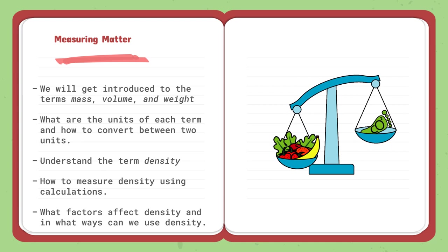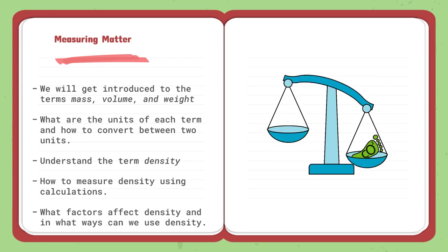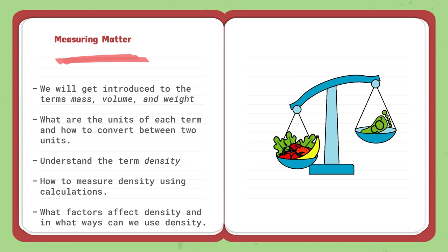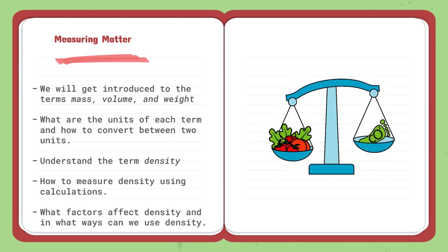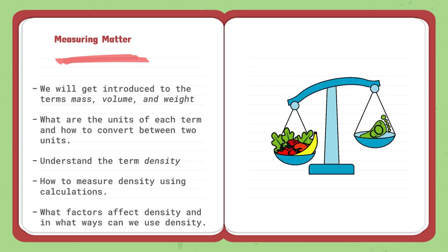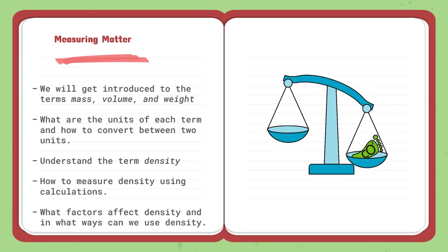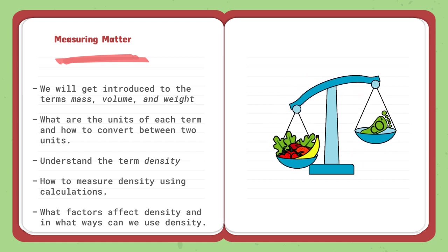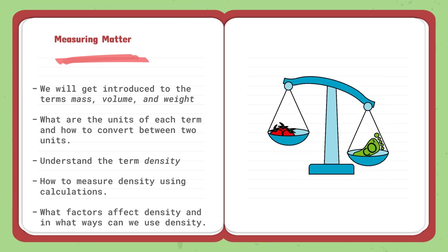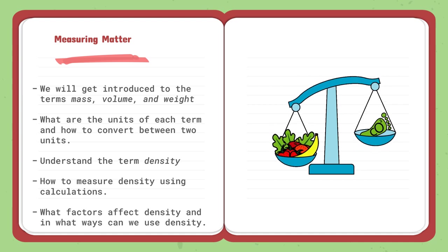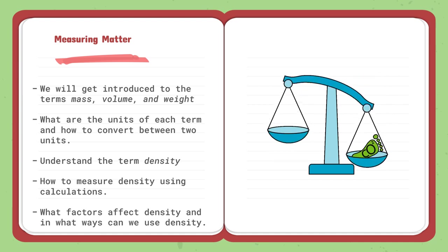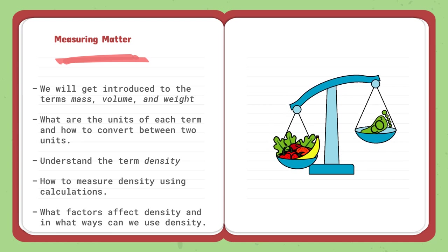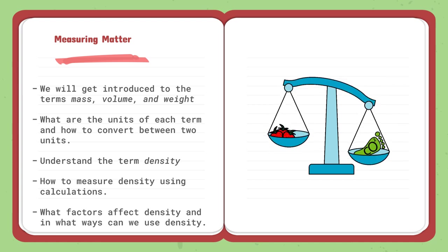Moving on to the next lesson which is Measuring Matter. Since we have Measuring, it means that we will use mathematical calculations. First, we will get to know the meaning of mass, volume, and weight. We will know the units of each terminology and how to convert from one unit to the other. Then we will understand the term density. We can measure density using calculations with the formula density equals mass over volume. We will be given the mass and volume, divide them to calculate density, and know the unit of density. Then we will know what factors affect density and in what ways we use density.